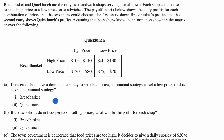What we have here is a free response question that you might see on an AP microeconomics exam that deals with game theory. It tells us Breadbasket and Quick Lunch are the only two sandwich shops serving a small town — an oligopoly situation with only a few firms. Each shop can choose to set a high price or a low price. The payoff matrix shows the daily profits for each combination of prices, with the first entry showing Breadbasket's profits and the second showing Quick Lunch's profits.